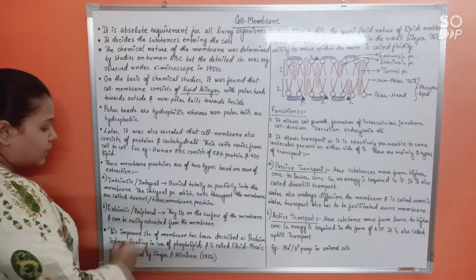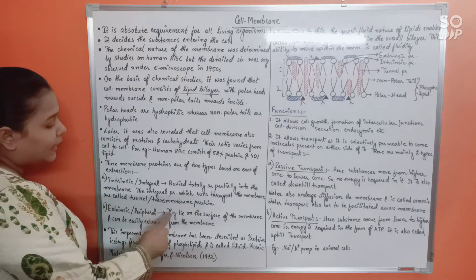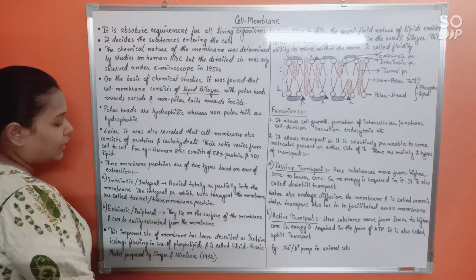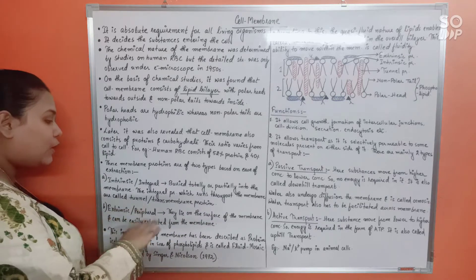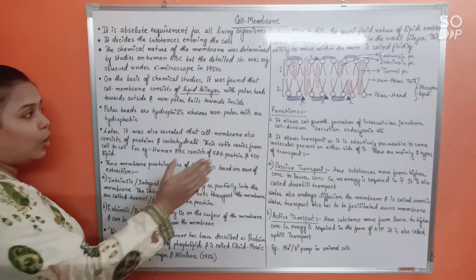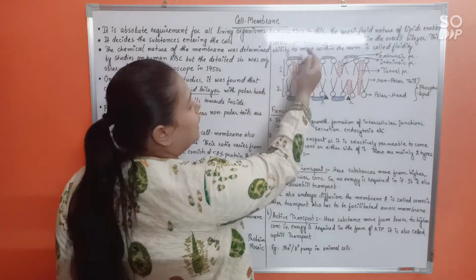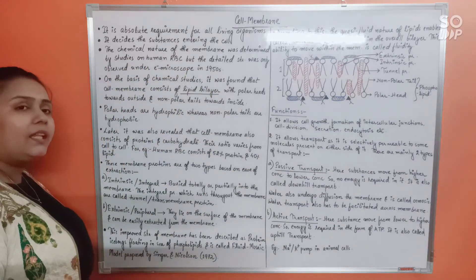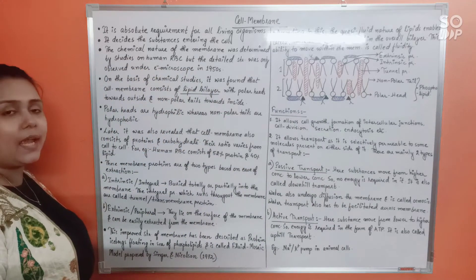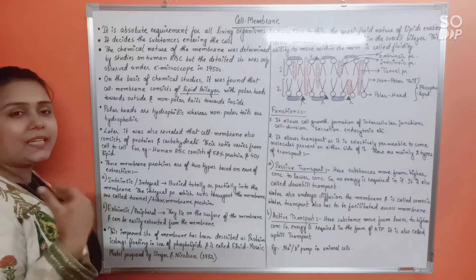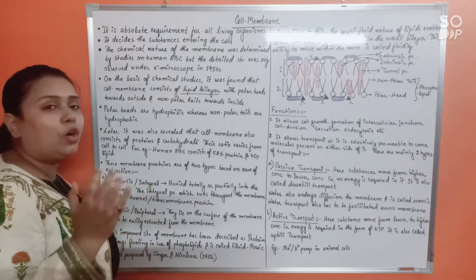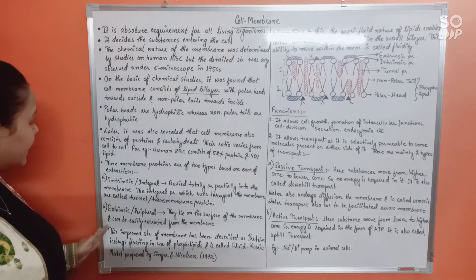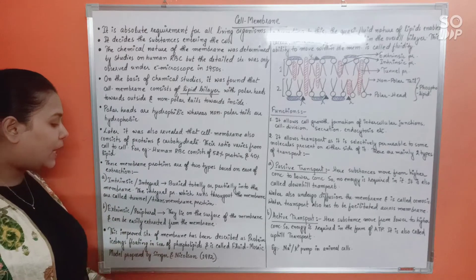Extrinsic or peripheral proteins lie on the surface of the membrane and can be easily extracted by certain chemical treatments. This improved structure of membrane has been described as 'protein icebergs floating in the sea of phospholipids,' with the phospholipid forming a huge sea in which proteins float like icebergs.